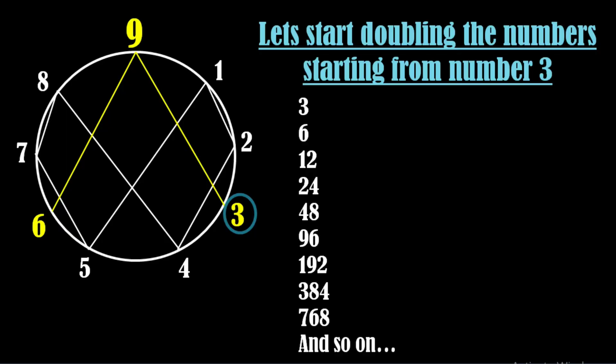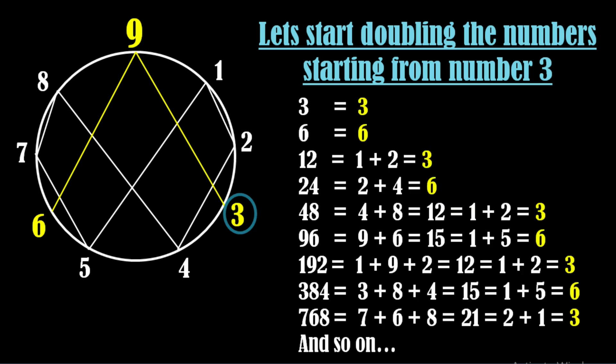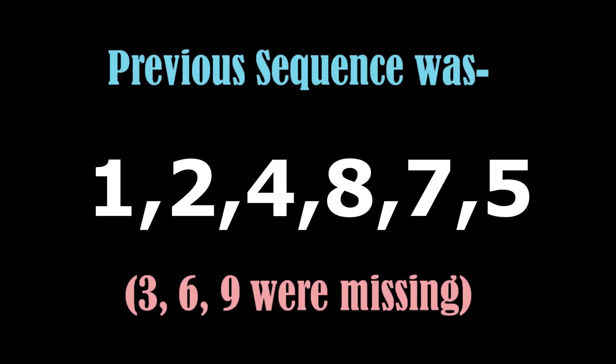But what will happen if we double or half the numbers starting from number 3 or 6? By doubling the previous number each time, we find that the digital roots of the numbers consistently yield only two numbers: 3 and 6. Remarkably, all the numbers from the previous sequence are absent this time, and numbers 3 and 6, which were absent in the previous sequence, are now the only ones present.